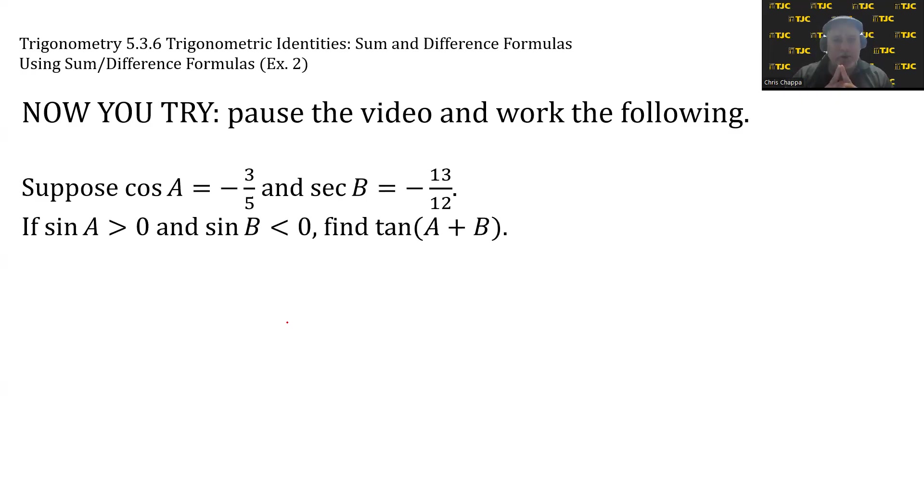For A, we know cosine is negative and sine is positive, so that narrows it down to a quadrant. For B, secant is negative and sine is negative, so that narrows it down to a quadrant. We're being asked to find tan(A + B). The formula for tan(A + B) only needs the values of tan A and tan B. Your mission is to, in the right quadrants, find the values of tan A and tan B, then substitute them. Pause the video and give it a try.